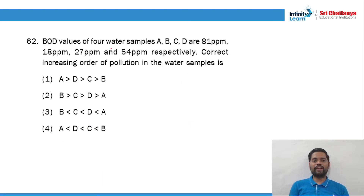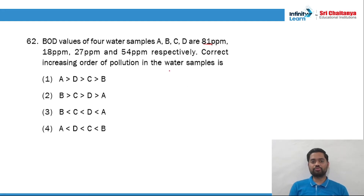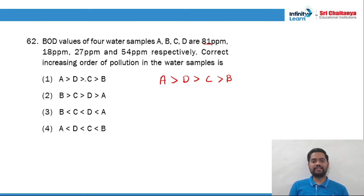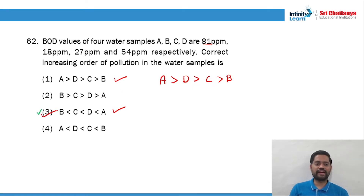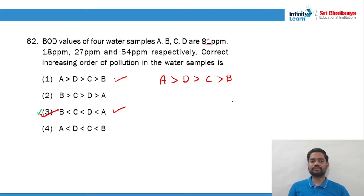Talking about question 62: BOD values for four water samples A, B, C, D are given. Correct increasing order of pollution — more the BOD, more polluted the water. A = 81, B = 18, C = 27, D = 54. Highest is A, then D, then C, then B. So the order is A > D > C > B. ADCB is the right answer. Both matching options are the same, so you can mark option number 3.